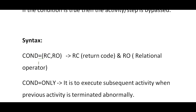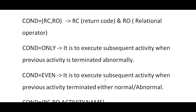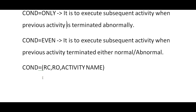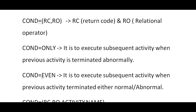There are four ways of representing the COND parameter. One is COND equal to return code and relational operator. Another is COND equal to ONLY — meaning execute subsequent activities when previous activities terminated abnormally. Or COND equal to EVEN — meaning execute subsequent activity when previous activity terminated either normally or abnormally. The fourth is COND equal to return code, relational operator, and an activity name.